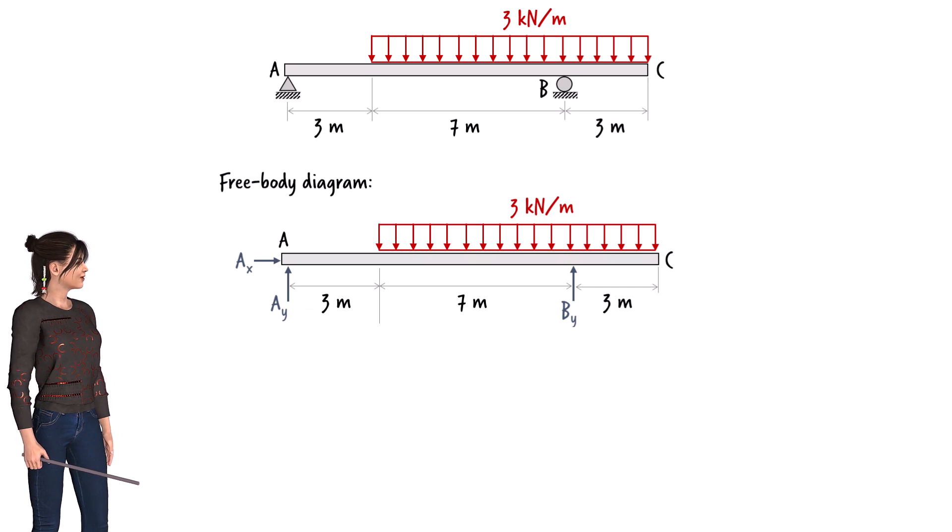I like to represent uniformly distributed loads using rectangles. Since the magnitude of the load is 3 kN per meter, we can say the height of the rectangle is 3.